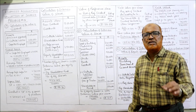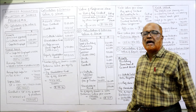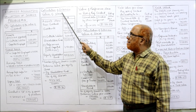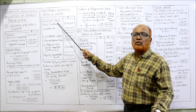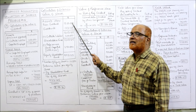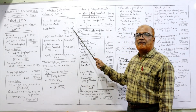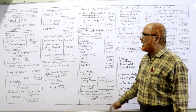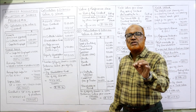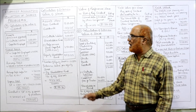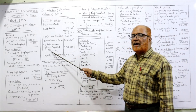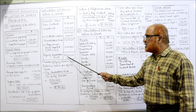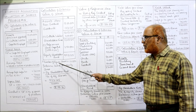Now we calculate the intrinsic value of the share. Assets other than goodwill: ₹15 lakh. Add calculated goodwill: ₹1,03,125. Total assets minus outside liabilities of ₹4 lakh gives shareholders' fund of ₹12,03,125. From this we deduct the preference share capital: 2,500 shares of ₹100 each = ₹2,50,000.